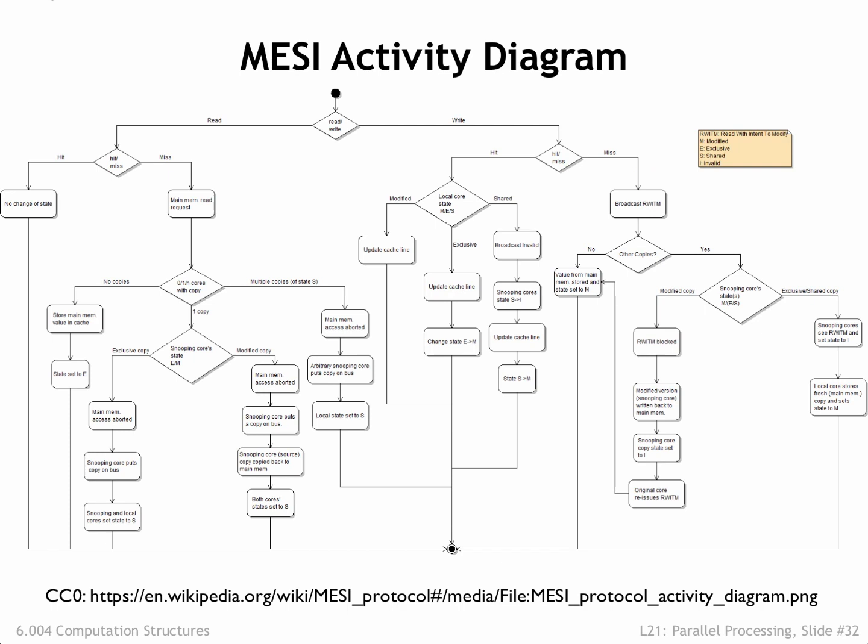Here in microtype is a flowchart showing what happens when — if you're interested, try following the actions required to complete various transactions. Intel, in its wisdom, adds a fifth F state, used to determine which cache will respond to read requests when the requested cache line is shared by multiple caches. Basically it selects which of the shared cache lines gets to be the responder.